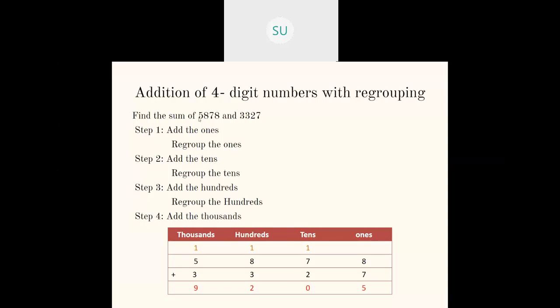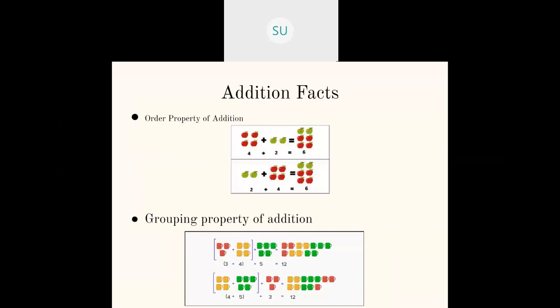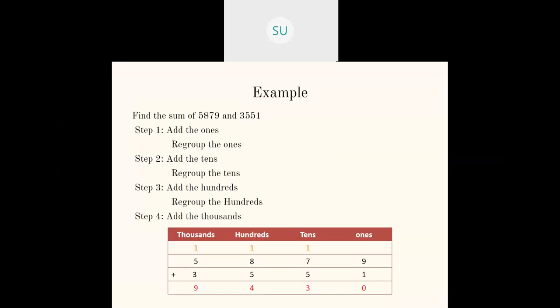We had the example of 5,878 plus 3,327. When you add these two numbers, you get a total sum of 9,205. Then another example: 5,879 and 3,551. When we add these two numbers, we get a sum of 9,430. This was addition with regrouping — what we saw in the last class.